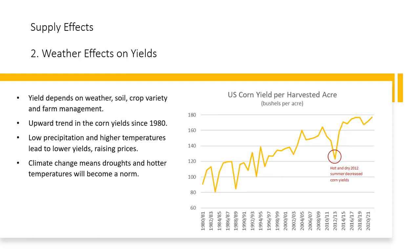Another supply driver is how weather affects corn yields. Yield per acre is determined by weather, soil, crop variety, and farm management, and there is an upward trend in corn yields over the last 40 years. Westcott and Joeson analyzed the impact of hot and dry summer weather on significantly reduced corn and soybean yields in the 2012 growing season. They postulate that low precipitation and higher temperatures lead to lower yields, which shift the supply curve to the left, raising prices and reducing quantities demanded. Climate change means droughts and hotter temperatures will become the norm, and farmers will have to adjust to changing conditions.